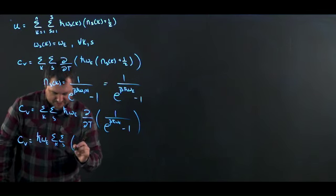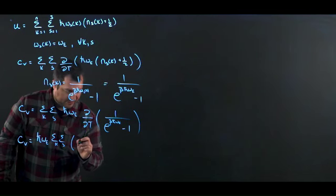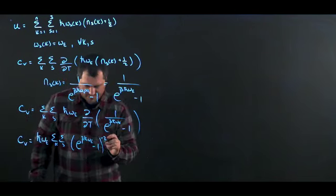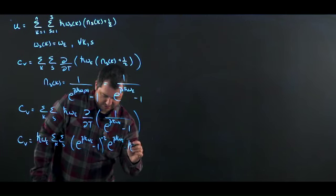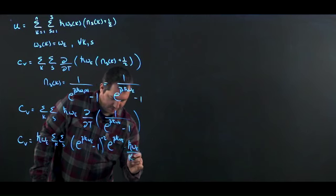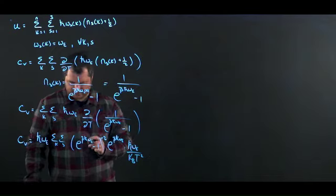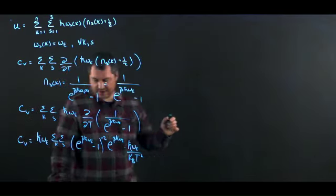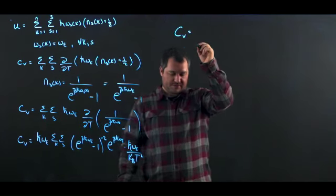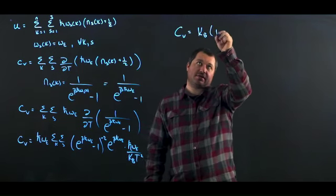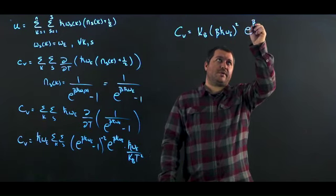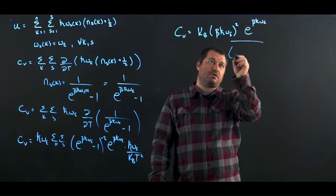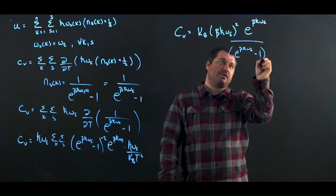So, C_V is going to be equal to ℏ omega_E, sum over k, sum over s. The derivative gives us: (e^(β ℏ omega_E) minus 1)^(−2) times e^(β ℏ omega_E) times (ℏ omega_E) all over k_B T squared. This further simplifies to C_V equals k_B times [β ℏ omega_E]² times e^(β ℏ omega_E) over (e^(β ℏ omega_E) minus 1) squared.